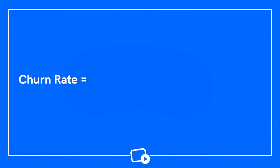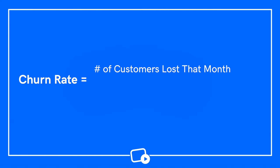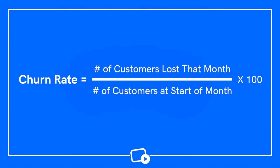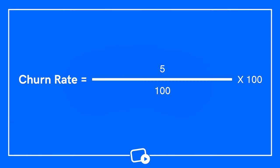Calculating your churn is actually pretty straightforward. You take the total number of customers you lose each month, divide that by the total number of customers you started the month with, and then multiply it by 100. For example, if you have 100 subscribers to start the month and you lose five throughout the month, your churn rate would be 5%. Churn does not include the customers you gain over the same period of time.